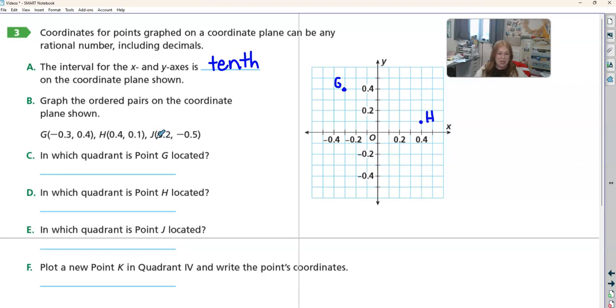And now J, we have positive 2 tenths, negative 5 tenths. We're going over 2 tenths and down 1, 2, 3, 4, 5 tenths. Right? 1, 2, 3, 4, 5. And that is point J.